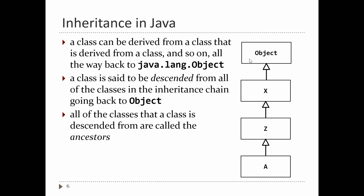X has only one ancestor: Object. Instead of 'ancestor' you can use 'superclass' — A has superclasses Z, X, and Object. Conversely, Object has subclasses X, Z, and A. Sometimes you really only want to talk about the immediate superclass: the immediate superclass of Z is X, and the immediate subclass of X is Z. In those cases, I will explicitly say 'immediate superclass' or 'immediate subclass.'